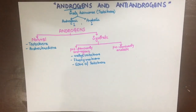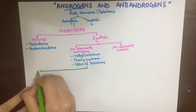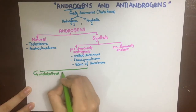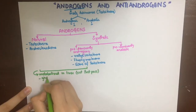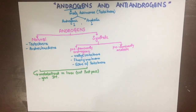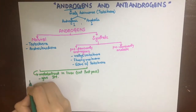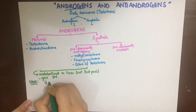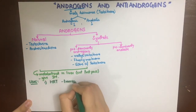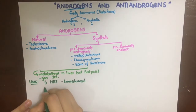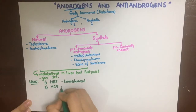Testosterone esters include cipionate, propionate, and enanthate. The naturally occurring and synthetic androgens with predominantly androgenic actions have the same uses and will be discussed together. They are metabolized in the liver and have extensive first-pass metabolism, so they should be given intramuscularly. The primary use is hormone replacement therapy in men with hypogonadism, and the route of administration is transdermal to maintain a constant therapeutic level.